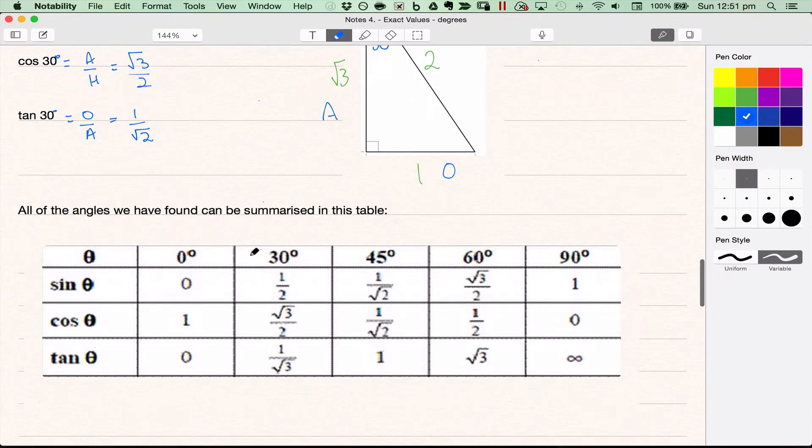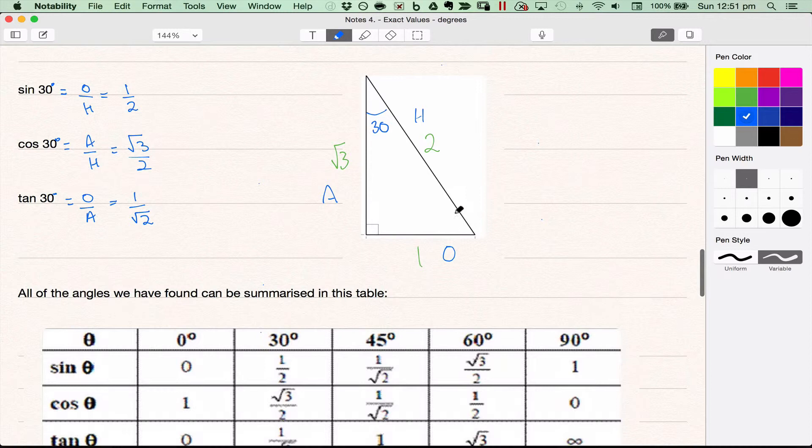Now all the angles we've found so far can be summarized in this table, and this is what you'll need to memorize. So you either need to memorize the values in this table - some people just like to look at the table and memorize it. Some people like to remember those two triangles that I showed you and they can find any of these values.